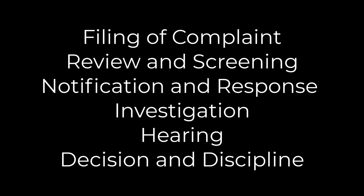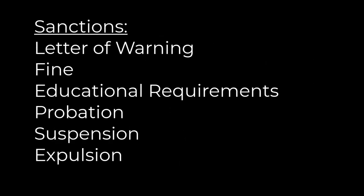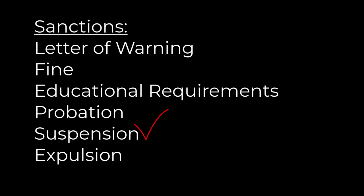If there's a violation of ethics, here are some of the disciplinary sanctions. They can issue a letter of warning — a written warning regarding the violation. They can impose a monetary fine. They can require completion of specific continuing education courses related to the violation. They can place you on a probation period with certain conditions. They can temporarily remove you from membership privileges, and finally, they can permanently remove you from membership privileges. The emphasis throughout this process is on due process, confidentiality, and fairness.